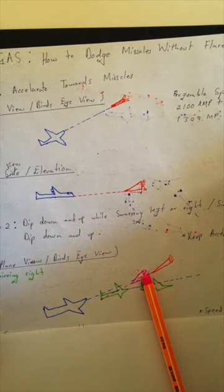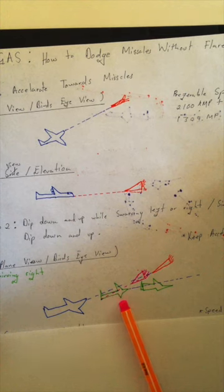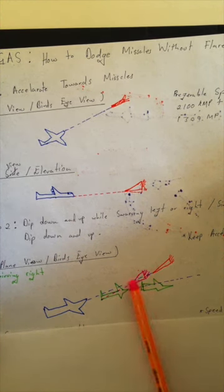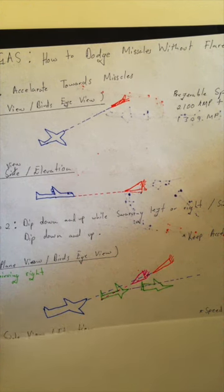As the missile comes close to you, simply turn left while making a tangent. As you turn, the missile will miss the back of the jet engine.